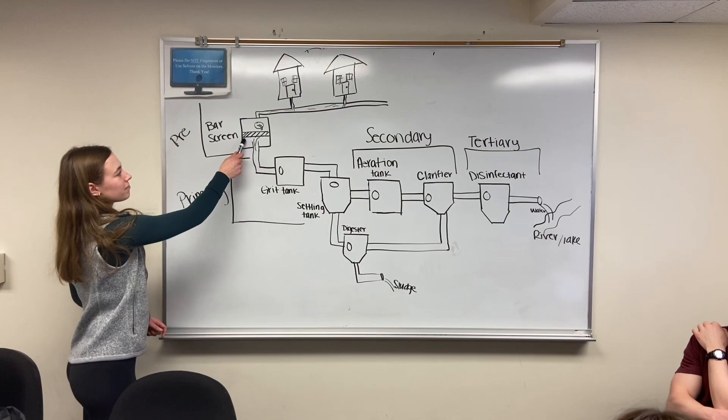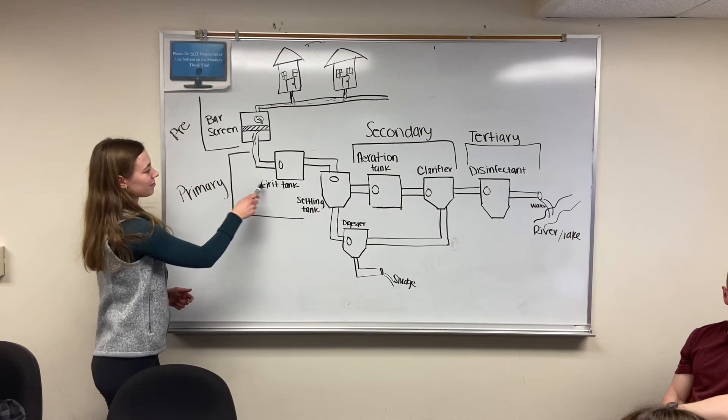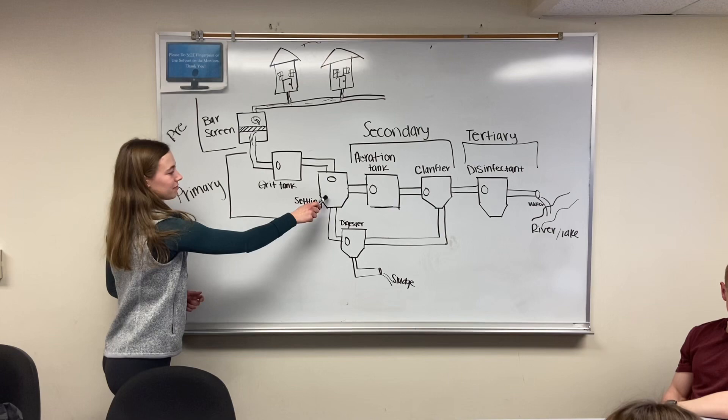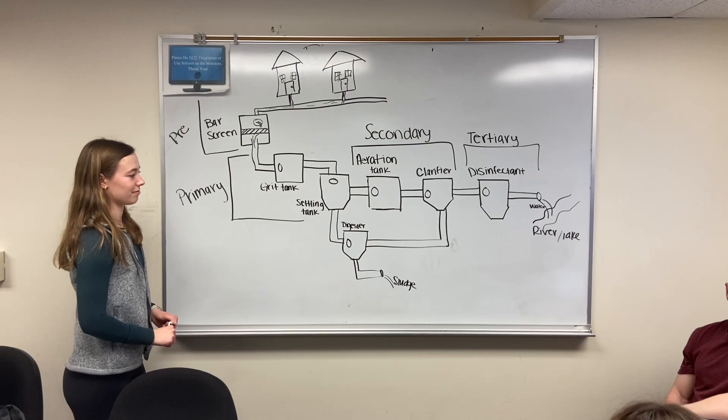The next treatment stage is primary treatment. The water is moved into large tanks where the solids remaining in the water settle to the bottom of the tank. The solids are referred to as sludge. The sludge is removed from the water and moved to a different tank to be processed in the secondary treatment stage.